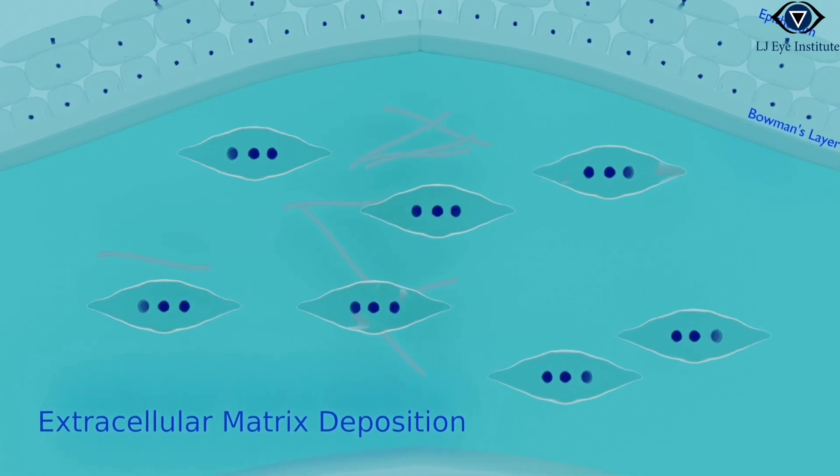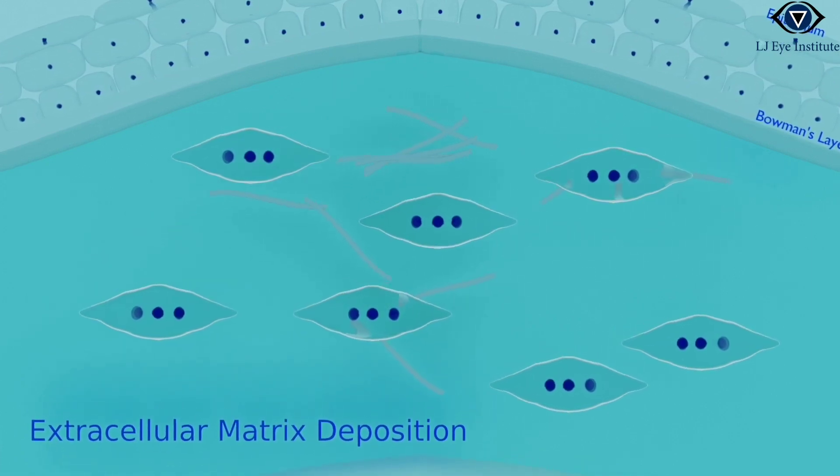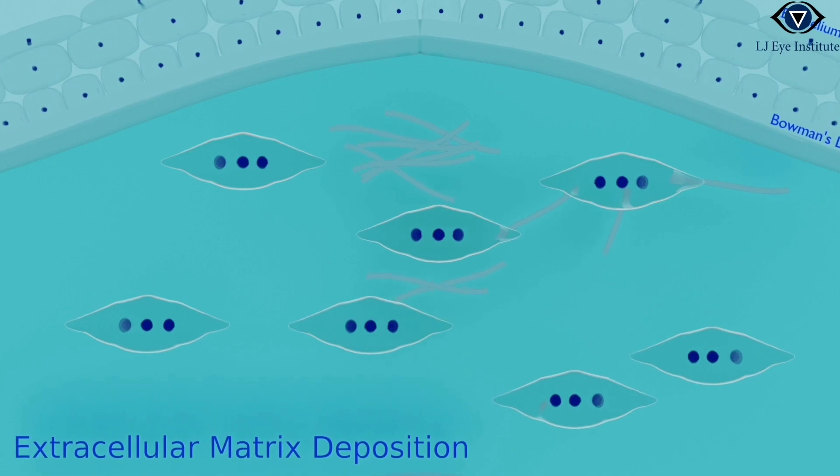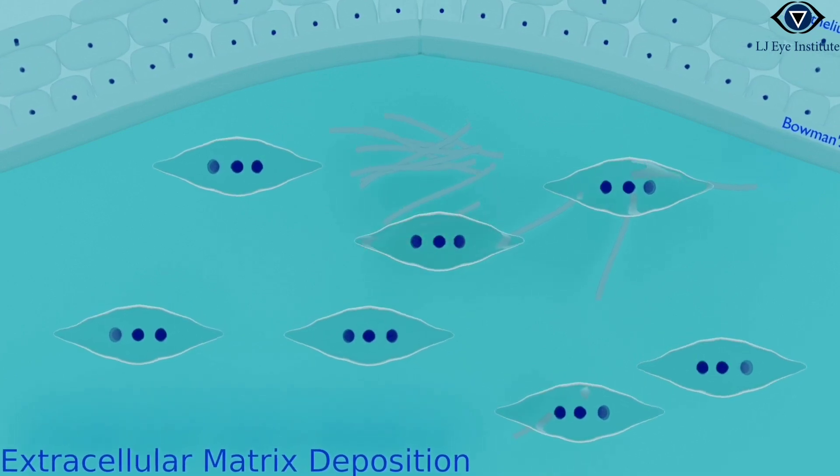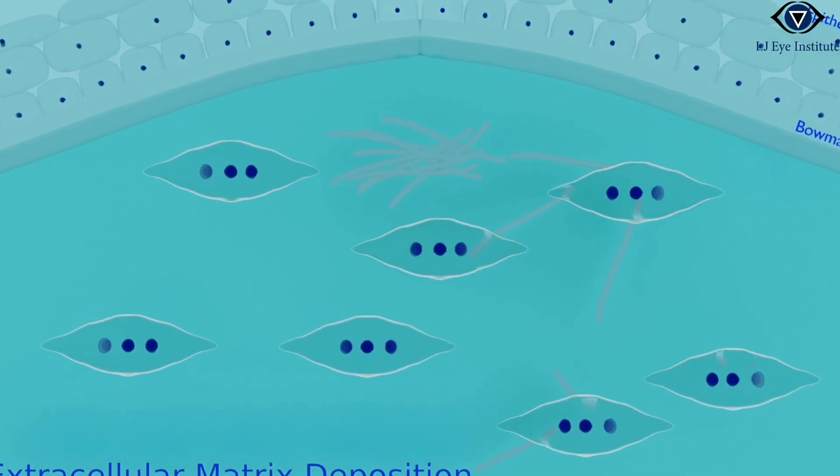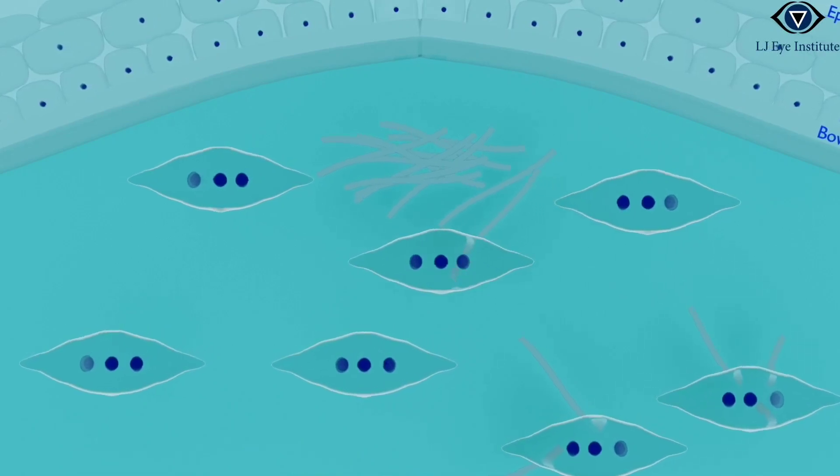These collagen fibers, when meticulously arranged, maintain the cornea's property of being both transparent and strong. If the organization of these fibers is laid down haphazardly, the cornea could become opaque.